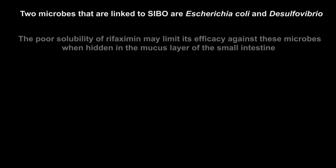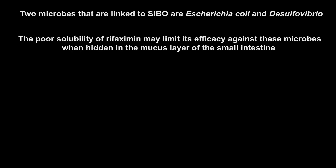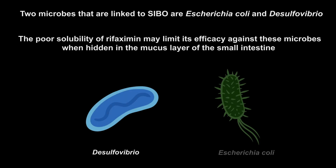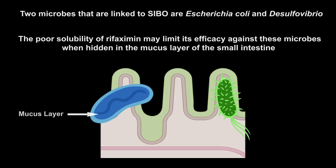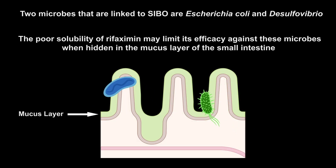Two microbes linked to SIBO are Escherichia coli and Desulfovibrio. The poor solubility of Rifaximin may limit its efficacy against these microbes when hidden in the mucus layer of the small intestine.